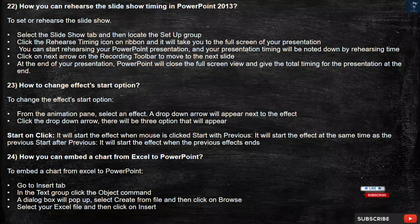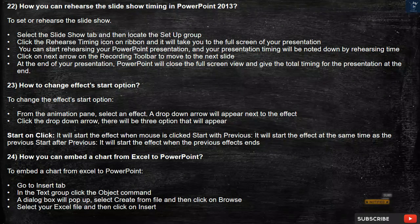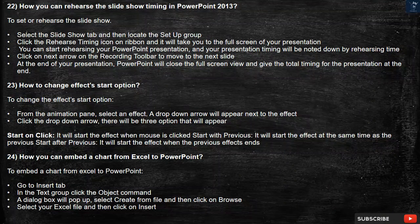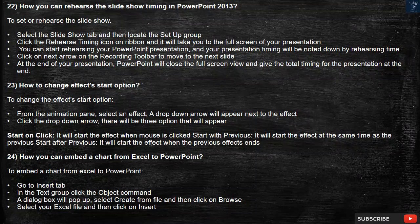Question 23: How to change the effects start option? To change the effects start option, from the Animation pane, select an effect. A drop-down arrow will appear next to the effect — click it. There will be three options: Start on Click (starts the effect when mouse is clicked), Start with Previous (starts the effect at the same time as the previous), and Start After Previous (starts the effect when the previous effect ends).